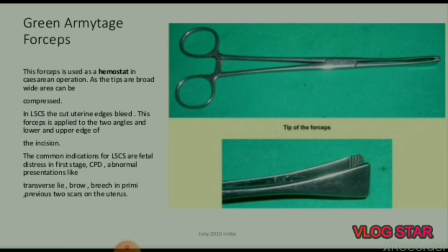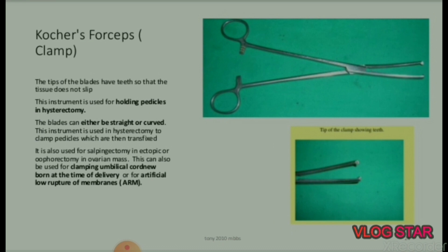Green Armitage forceps: used as a hemostat in cesarean operations. Since the tips are broad, a wide area can be compressed. In LSCS, the cut uterine edges bleed and this forceps is applied to the angles, lower and upper edges of the incision. Common indications for LSCS include fetal distress in first stage, CPD, abnormal presentations like transverse lie and brow, and primigravida.